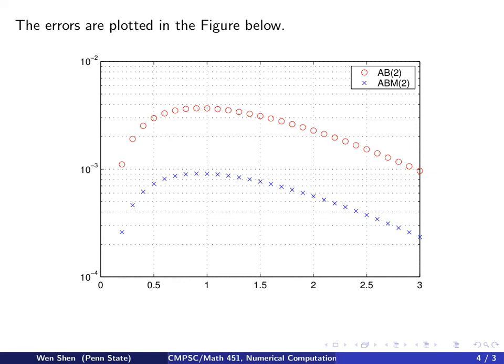Next we're going to show the errors plotted. So here's the plot of the error, and we see that in this plot, the red circles here are the error using the explicit AB method, and the blue X marks are the Adam-Bashforth-Moulton second order method.